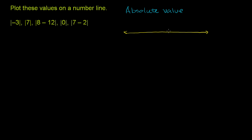On this number line, if this is 0, going to the left we have negative 1, negative 2, negative 3. Negative 3 sits right over there. The absolute value of negative 3 is essentially saying: how far is negative 3 from 0? It's 1, 2, 3 away from 0. So the absolute value of negative 3 is equal to positive 3.